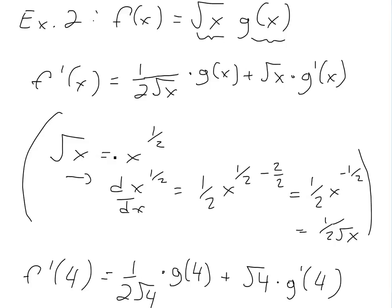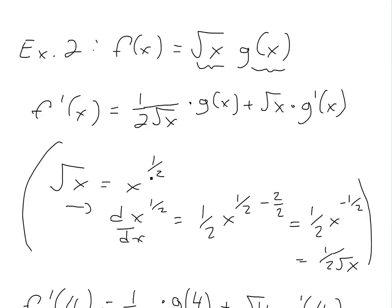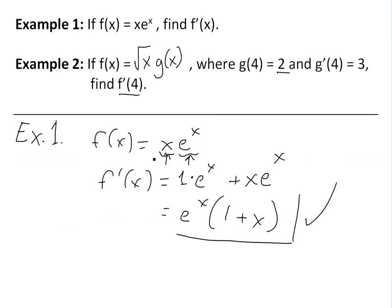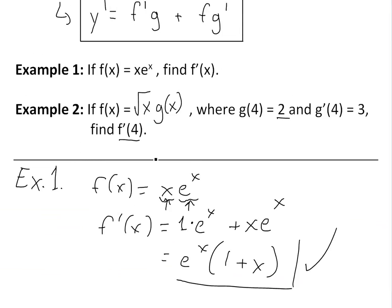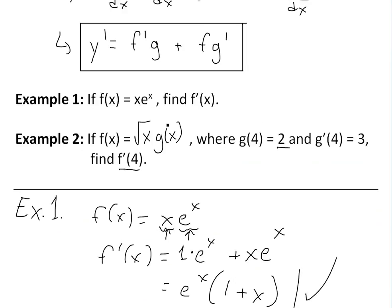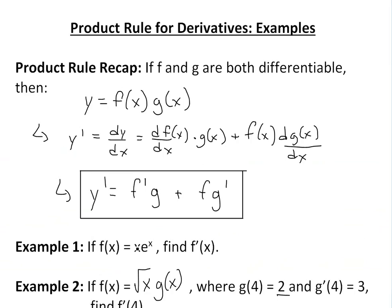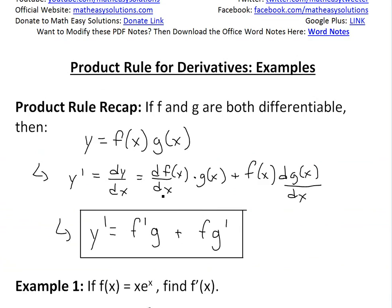So there is our answer — the derivative at x equals 4 is 6.5. That's all for today. I hope you learned from these examples. Make sure you watch the video links below on related concepts. You can also download these exact notes in the Dropbox link below. Hopefully you enjoyed, and stay tuned for another math easy solution. I'll see you next time.